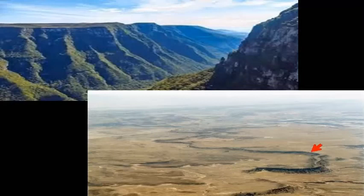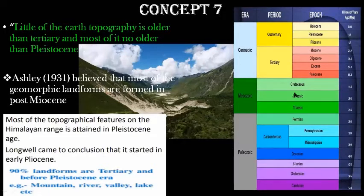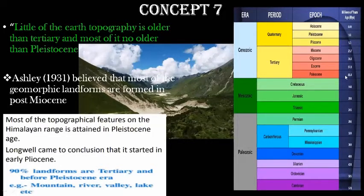Concept seven states that little of the Earth's topography is older than Tertiary, and most of it is no older than Pleistocene. Tertiary and Pleistocene are geological periods in the geological time scale. Little of the Earth's topography is older than 66.4 million years ago, and most of it is actually not older than 1.6 million years ago.